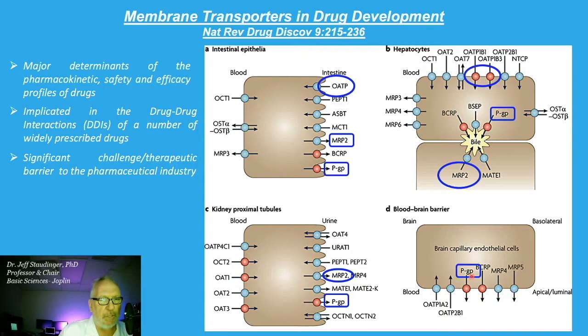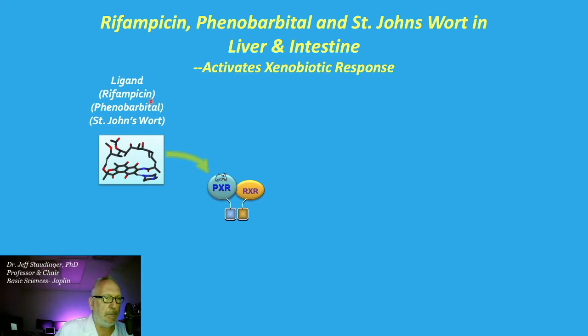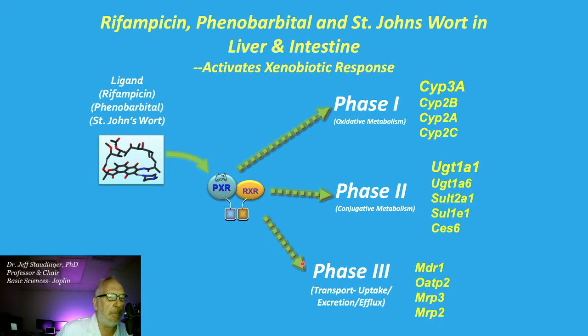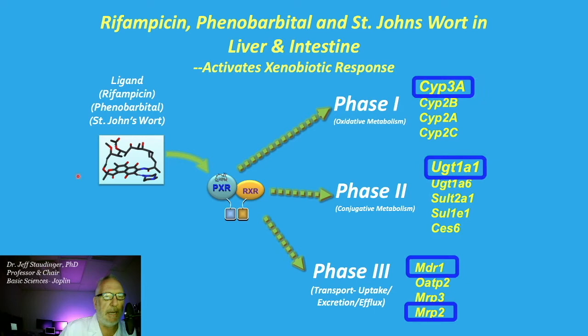The expression of these genes is regulated at the level of transcription in response to pharmaceutical compounds and herbal remedies. Numerous xenobiotics can bind to and activate Pregnane X Receptor (PXR) in a complex with its heterodimeric partner, Retinoid X Receptor. This heterodimer then regulates phase 1, phase 2, and phase 3 drug metabolism pathways. Important PXR target genes include CYP3A, UGT1A1, MDR1, MRP2, and OATP2.